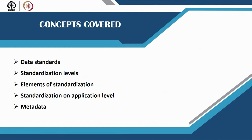Then we will look at elements of standardization — there are certain ways of how each and everything has to be standardized. Then how we can use data standardization at the application level, which is very important when you are putting out your projects or representing your data at a scale usable for a decision maker. The last part is the metadata.